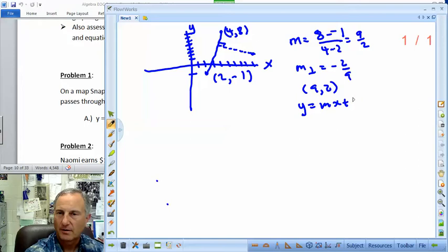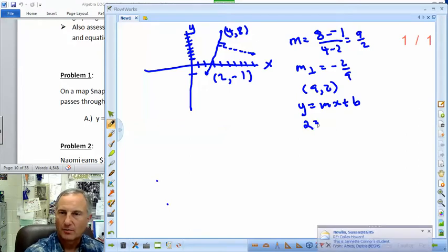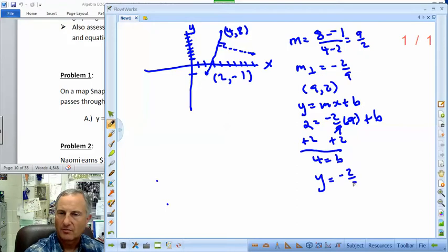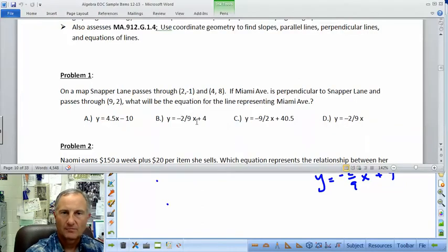So the slope of the perpendicular is going to be the negative reciprocal of that: -2/9. So we're going to take that slope, and we're going to take our point (9, 2), and we're going to plug it all into y equals mx plus b, and find the equation of our line in slope-intercept form. So 2 equals -2/9 times our x, 9, plus our b, our y-intercept. That's what we're trying to find. This cancels out here. I've got a -2, so I'm going to add 2. 4 equals b. So y equals -2/9 x plus 4.